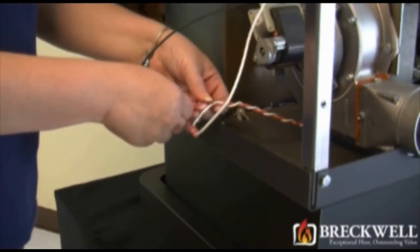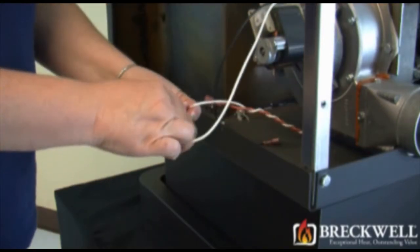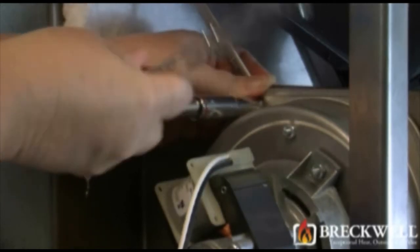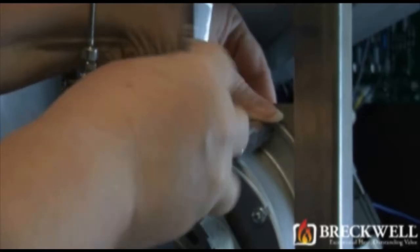Next, locate and unplug the two wires leading from the blower motor to the wiring harness. Remove the bolts holding the blower motor to the stove. Once all the bolts are removed, the blower motor can easily be removed from the stove.